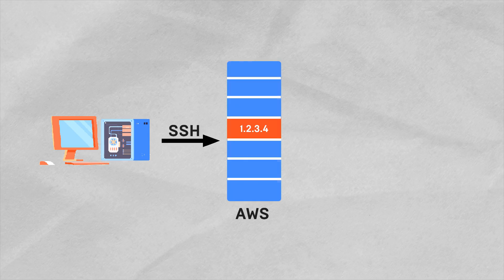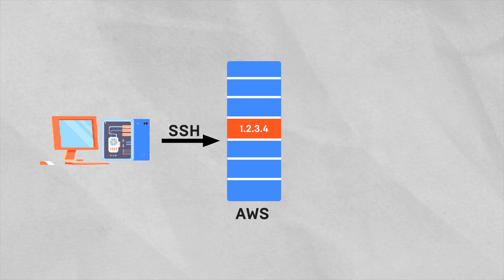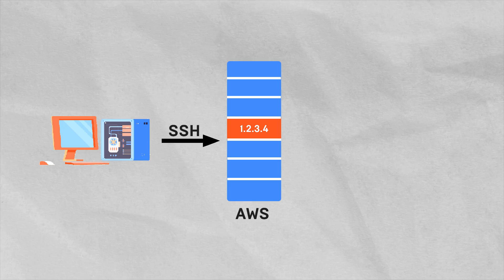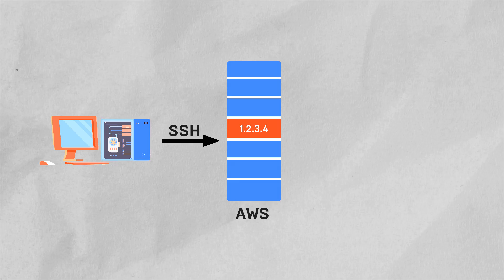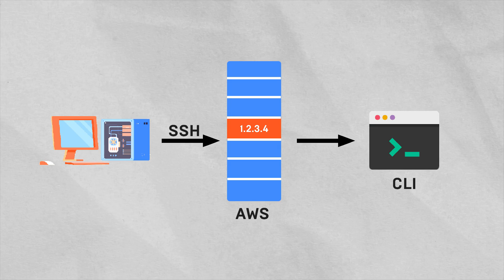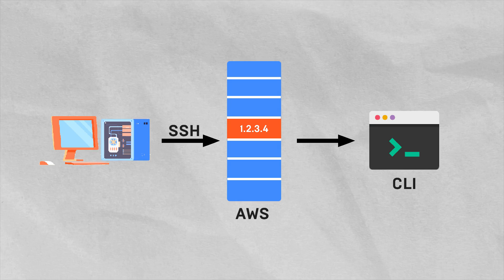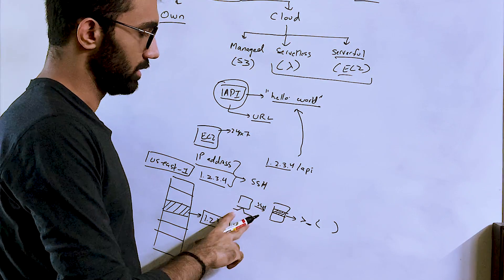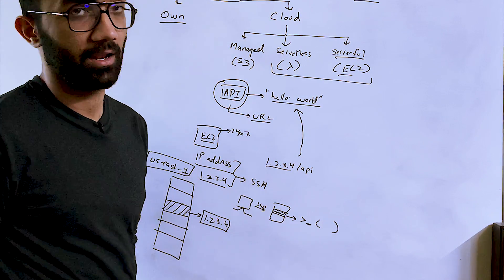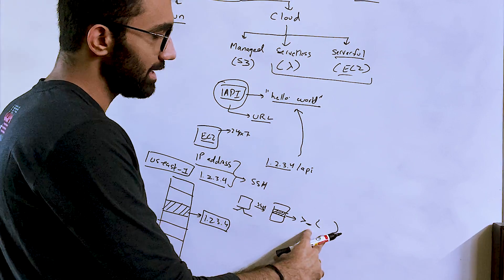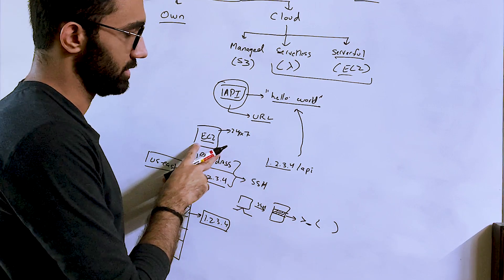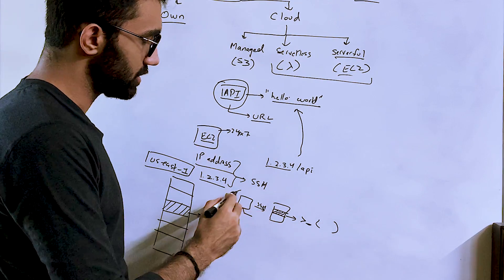You SSH into a computer somewhere on the other side of the world. You get access to this computer. You get into the CLI and you actually run commands, which you would do when you are deploying it on your own local computer. Just like you are doing NPM start or NPM run on your local systems. You do the same thing on these EC2 machines because in a nutshell, these are just like your computers, but sitting in the cloud.